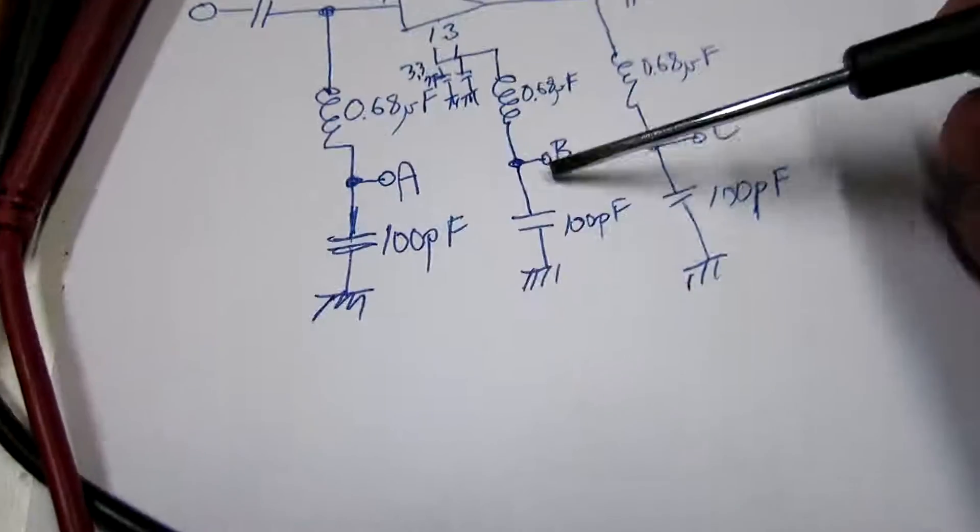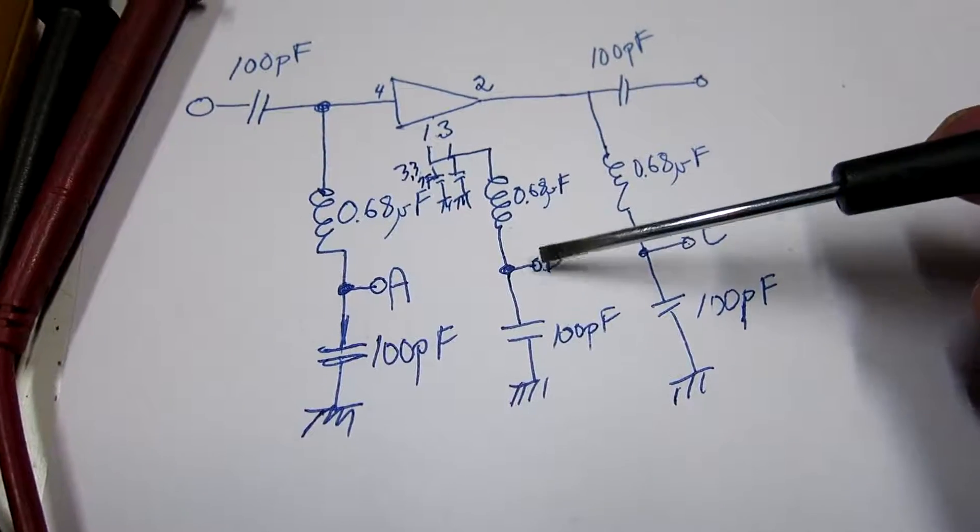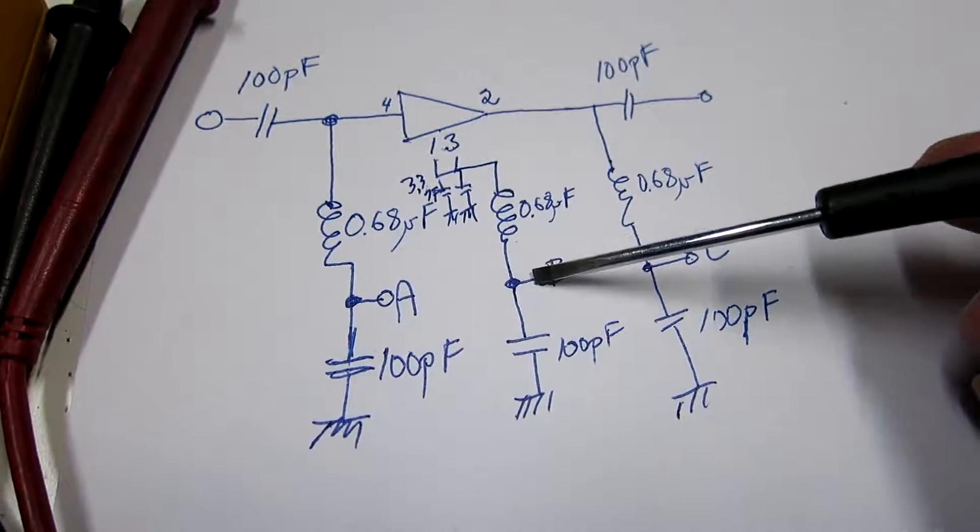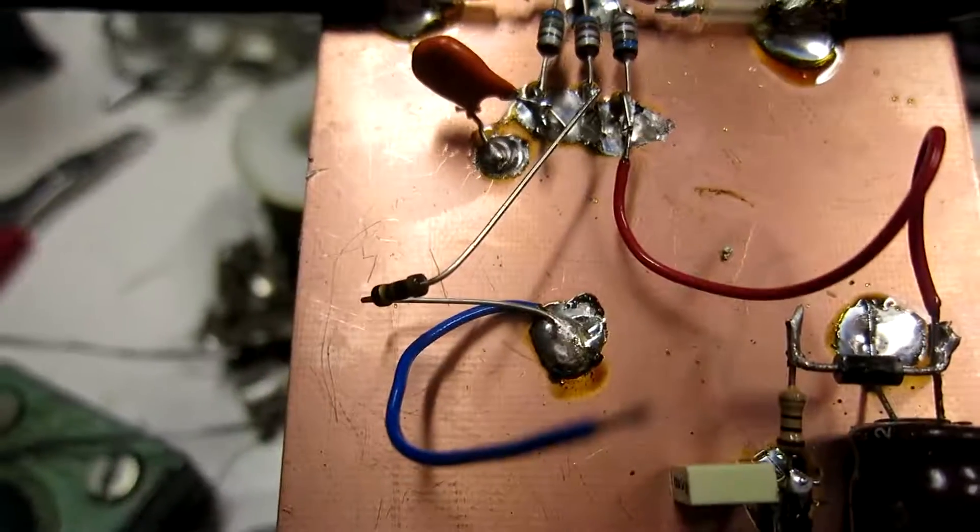Rather than having B grounded, I now put the 100 ohm resistor from B to ground. Like you can see here.